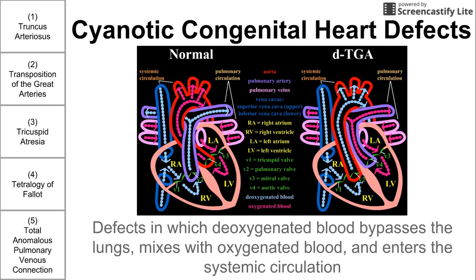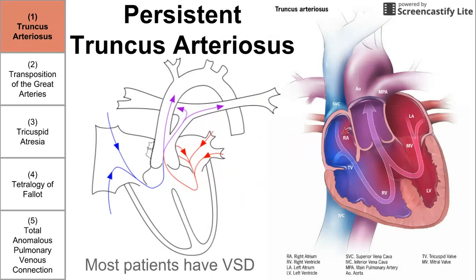We're going to be talking about five defects listed across the left, and they each have a number assigned to them. That number is going to serve as a mnemonic to help you remember these five defects. So let's jump into number one of the cyanotic congenital heart defects, and that is truncus arteriosus.